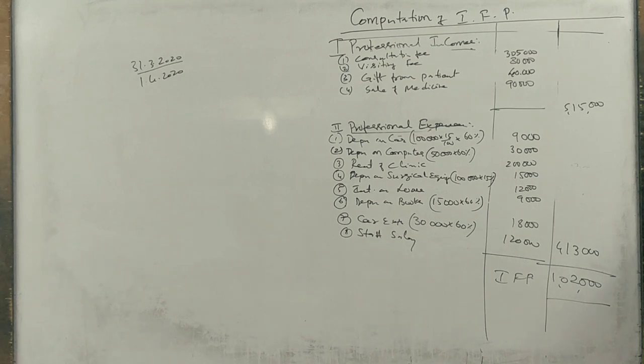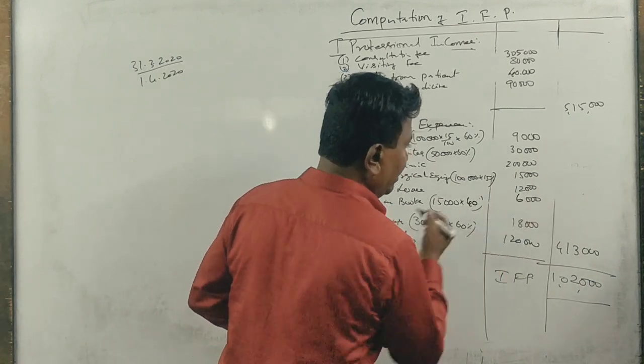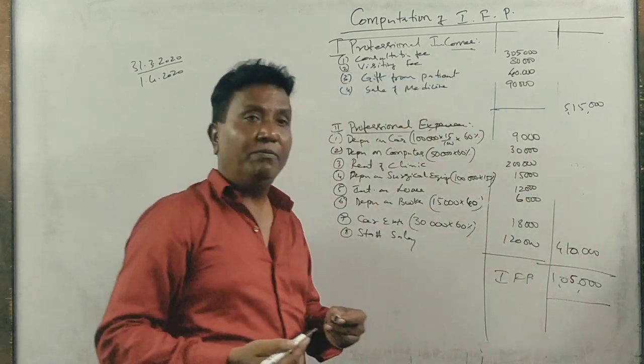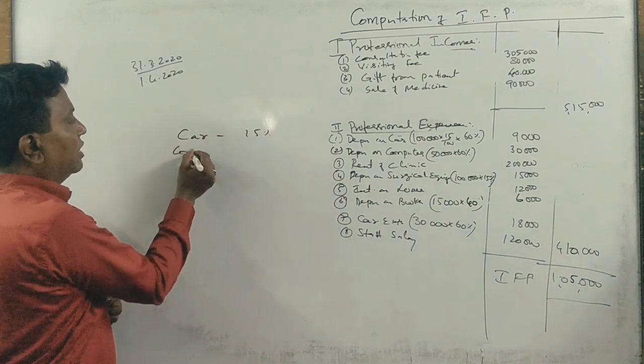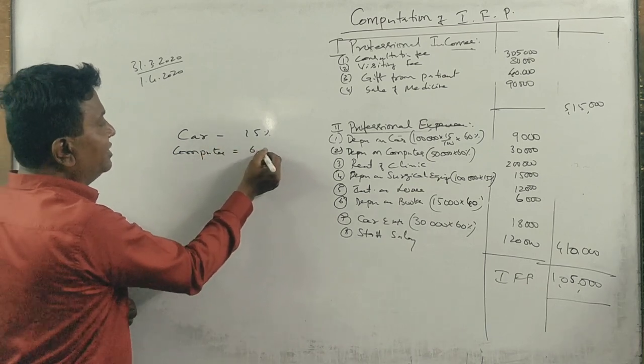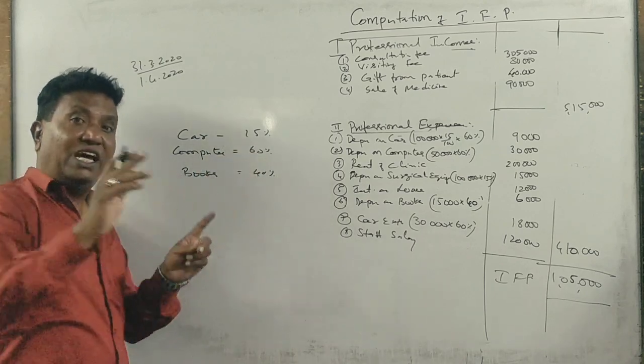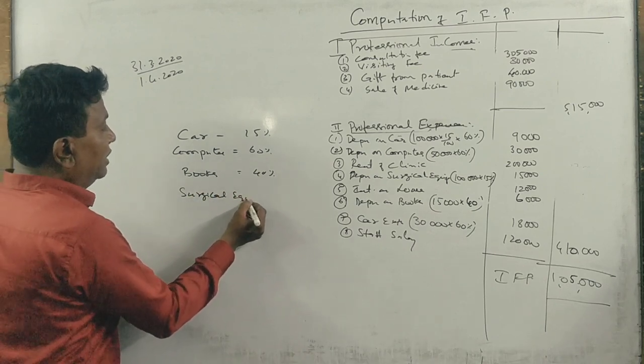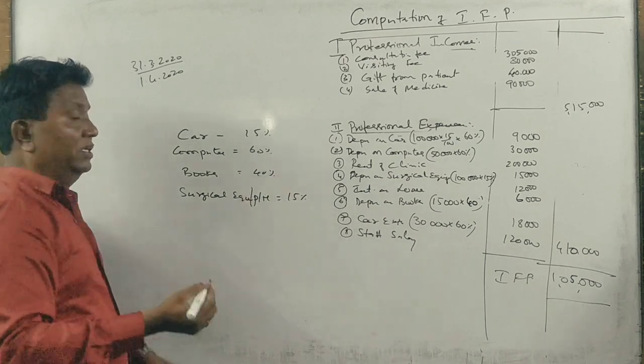Books are complete, 40%. Next, car 15%, computer 60%, books 40%. Next, surgical equipment and plant and machinery 15%. All of you got it? Building 10%.